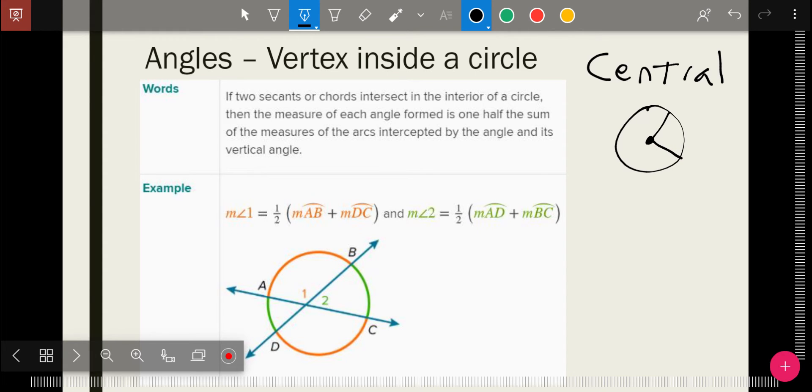Whatever this is on the outside is also on the inside. That's the central angle rule. So when it's not at the center, then the measure of the angle is equal to the arcs added together divided by two, or half the sum of the arcs.